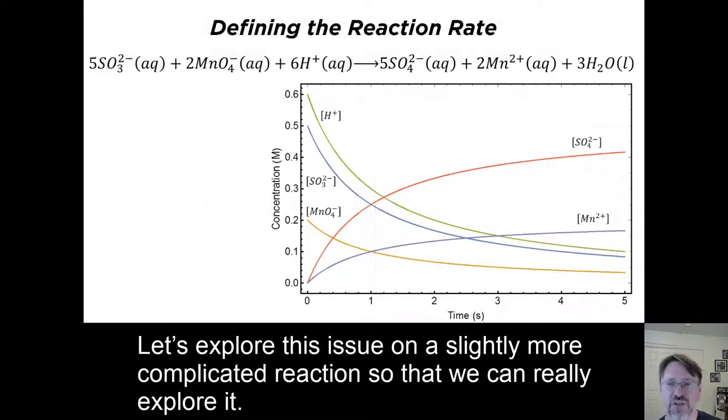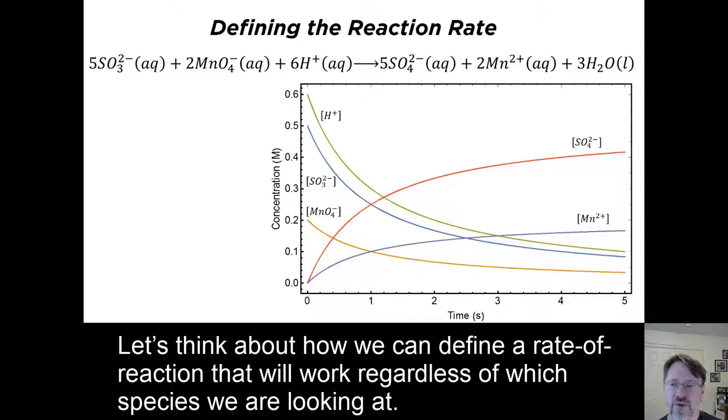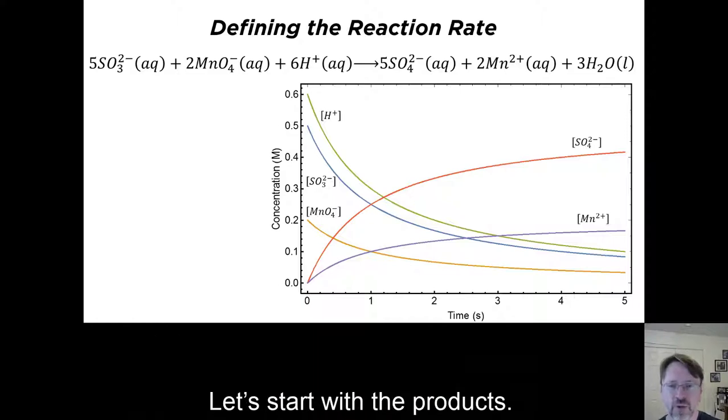Let's explore this issue on a slightly more complicated reaction so we can really explore it. Here we have a reaction with three different reactants and three different products, each with a different stoichiometric coefficient. Let's think about how we can define a rate of reaction that will work regardless of which species we are looking at.